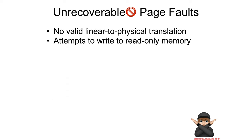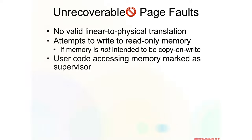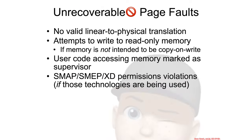Another unrecoverable page fault is an attempt to write to read-only memory if that is not intended to be copy-on-write. So this is some chunk of memory that is not supposed to be shared between two processes. If you try to write it, then the operating system could say, no, this is not copy-on-write — you're doing something wrong. Any user code attempting to access supervisor memory — well, the whole notion of ring zero, ring three separation is that it's trying to stop exactly that sort of behavior, so that's another grounds for termination of a process.